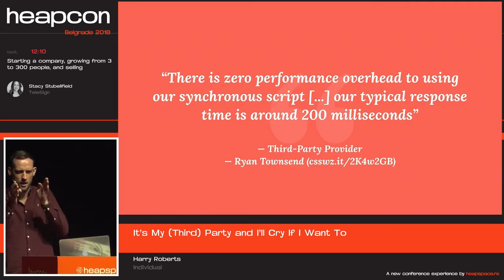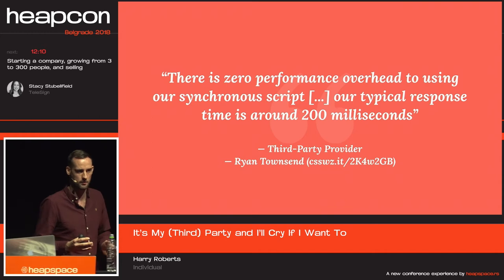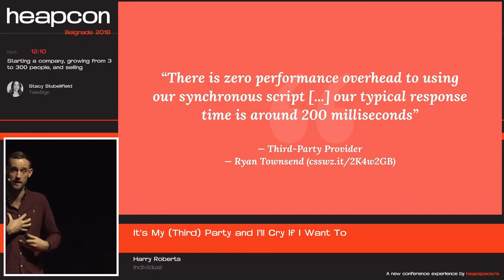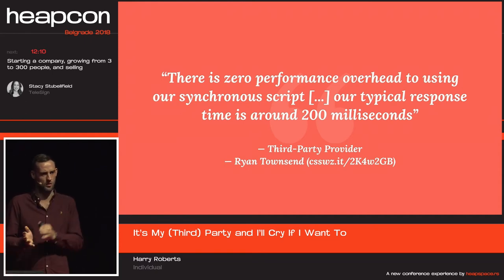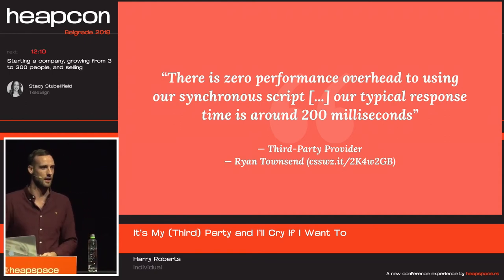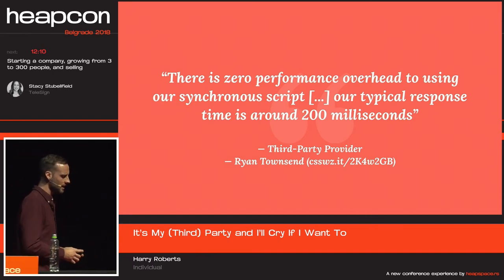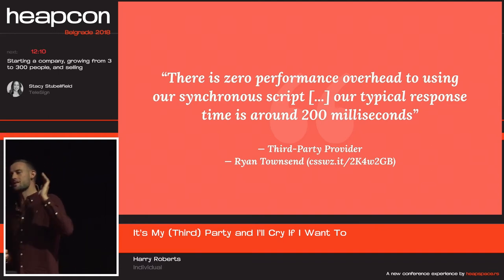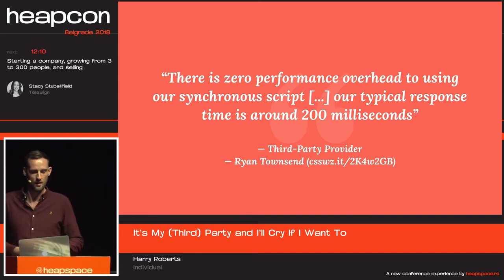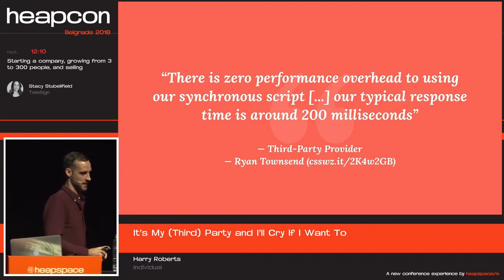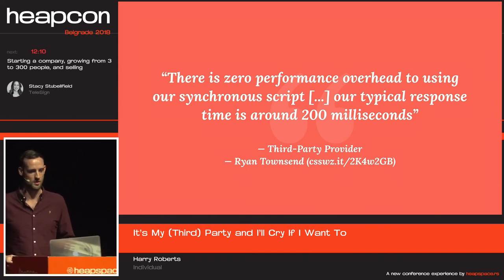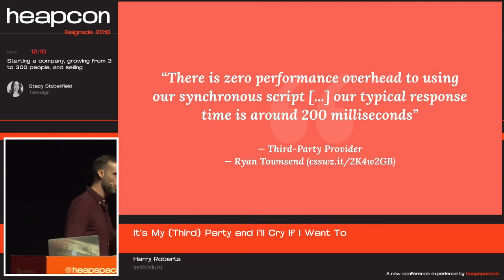I'm quoting a client quoting a third-party provider. A client of mine — Ryan Townsend, CTO of a performance-conscious e-commerce startup in Leeds — was concerned that one of his third-party providers was slowing the site down. He got on a call with them and said, 'I'm concerned your script is slowing the site down.' The provider replied, 'There is zero performance overhead to using our synchronous script — the typical response time is around 200 milliseconds.' My first thought: well, pick one. Is it zero or is it 200 milliseconds? And the second thing is that in web performance terms, 200 milliseconds is a long, long, long time. That's non-trivial.